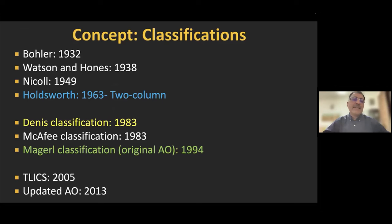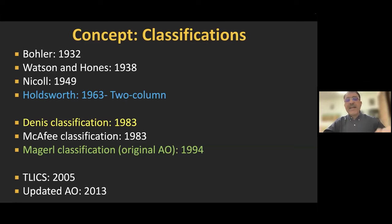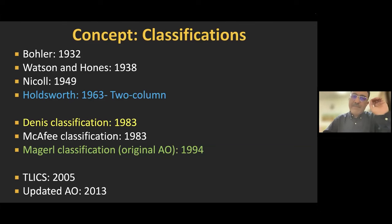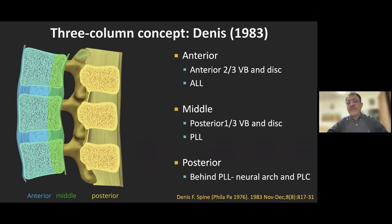Classification history starts from 1932 with Böhler, then Watson in 1938, Nicole in 1949, and an important classification by Holdsworth in 1963 who described the spine as two vertical columns — anterior (vertebral body, disc, ALL, PLL) and posterior (neural arch and PLC), and was the first to identify the posterior ligaments as an important tension band. Denis in 1983 introduced the three-column classification, dividing the anterior column into anterior and middle columns. McAfee in 1983 and the Magerl AO classification in 1995 followed, with Vaccaro updating the AO in 2013.